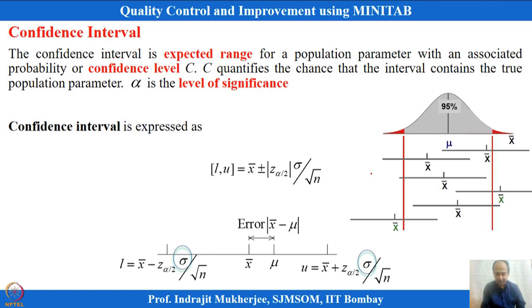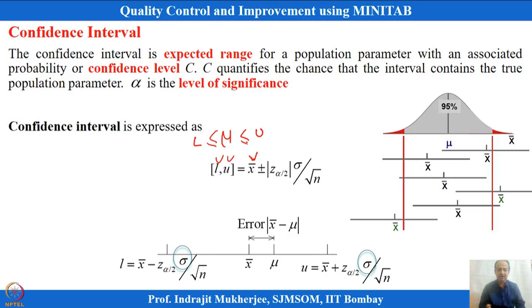With one estimation of x-bar, I can determine with certain confidence the lower bound L and upper bound U where μ will lie. Some bounds can be given to μ based on one estimation of x-bar. If I have the standard deviation information — which can be the sample standard deviation — I can determine where μ should lie.